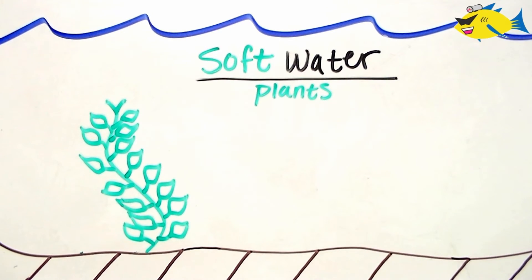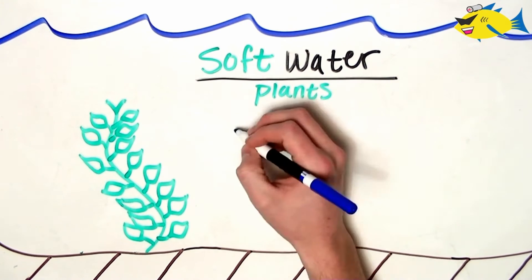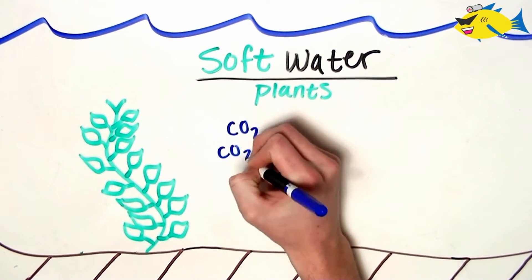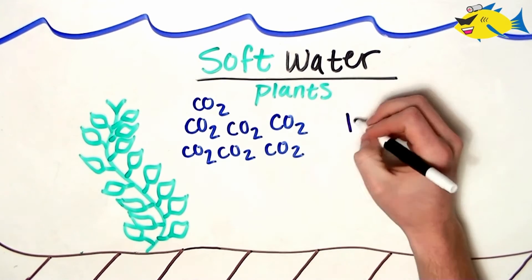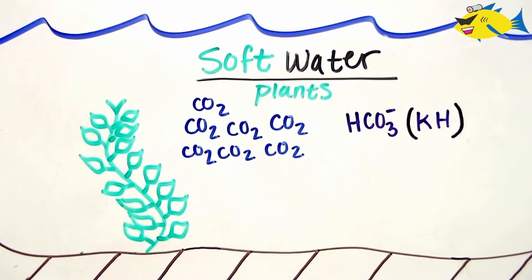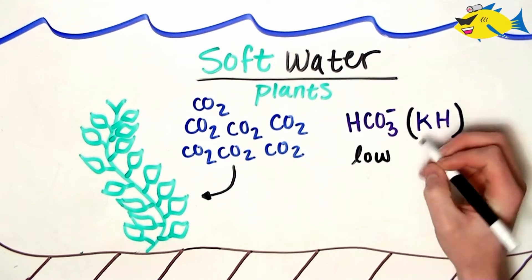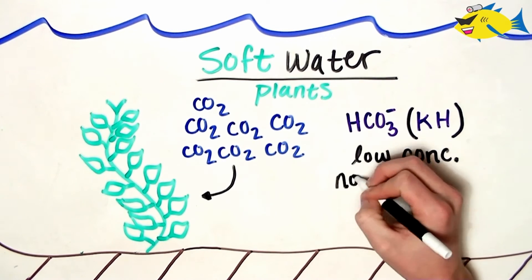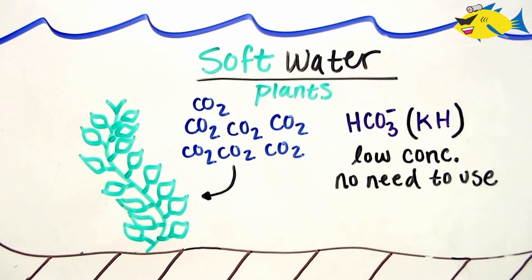Let's start with our soft water plants. Because their native environment has a lower pH, we can assume that the predominant form of DIC would be CO2 and bicarbonate concentrations would be minimal. Research has shown that because these plants generally have access to high concentrations of CO2, many of them have not evolved strategies to use bicarbonate. This makes sense because there would be no pressure on the plant to warrant an evolutionary adaptation.